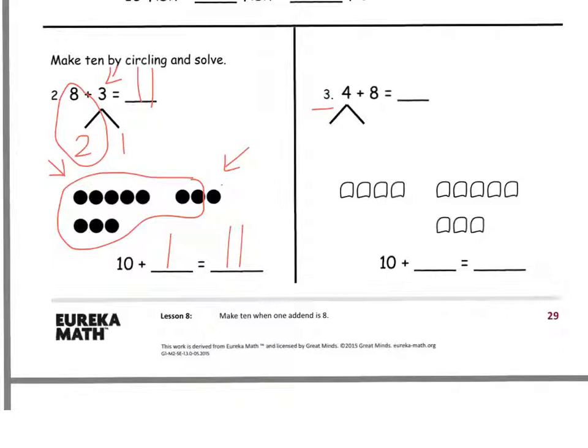For number 3, 4 plus 8. You're going to circle to make a 10. Then you're going to show a number bond of how you broke up the 4 and moved it around, and you'll fill in the new 10 plus number sentence. Pause the video now and complete number 3.